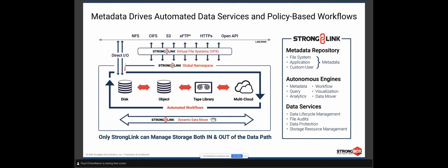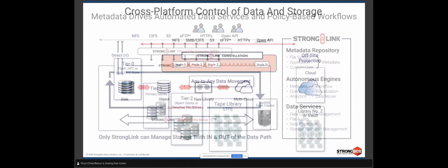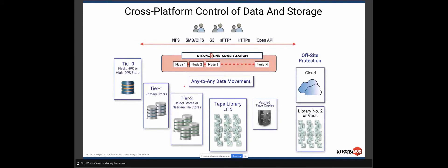We connect to storage both in and out of the data path so you can manage your high-IOPS, high-performance direct connections without going through any intermediary layer. We also present this in a global namespace across multiple protocols so you can create controlled access. Regardless of whether that storage handles different data types or protocols, you can access an S3-only object store via SMB or NFS. This is really where we start getting into how data can be better protected.